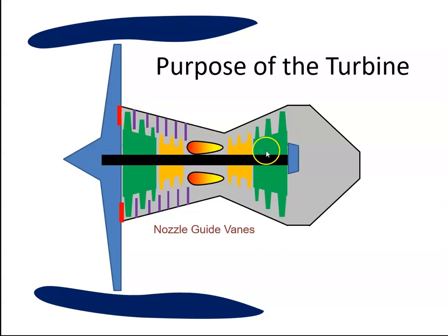And similarly in the turbine, we have rotor blades and nozzle guide vanes. So the nozzle guide vanes' purpose is to direct air onto the turbine so that it hits the turbine at the correct angle of attack.